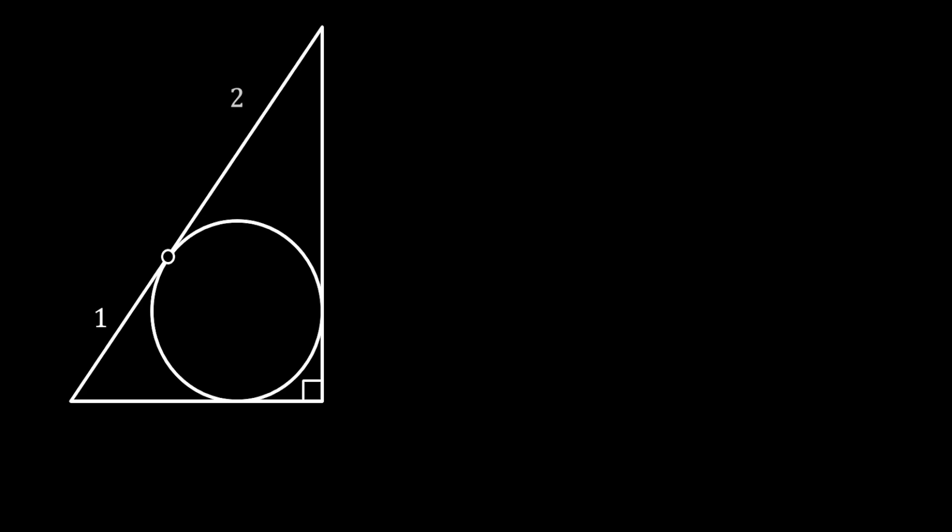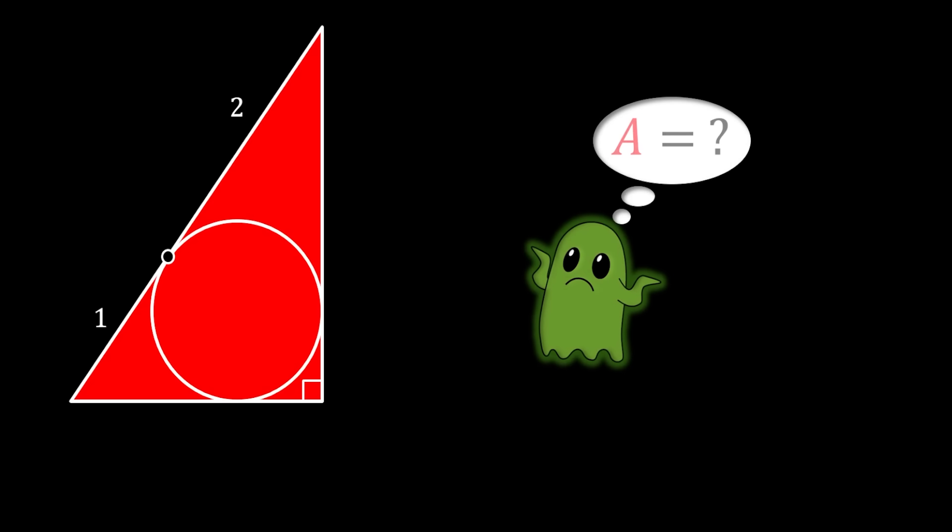This time, we will start with the right-angled triangle. Then we will inscribe the circle inside this triangle in such a way so that the intersection point between this circle and the hypotenuse is dividing the hypotenuse into two segments with the length of 1 and 2. The question is, can we somehow calculate the area of the whole triangle? You can pause the video right now if you want to try this problem for yourself and then come back and check the solution.